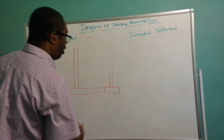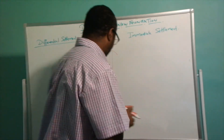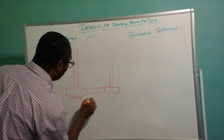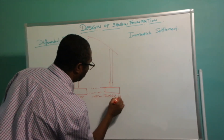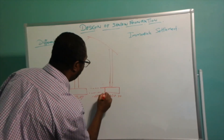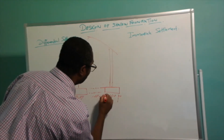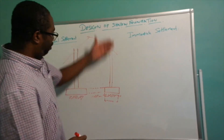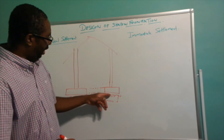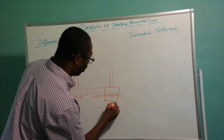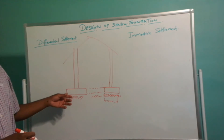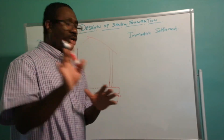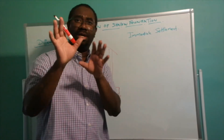Your differential settlement occurs when the soil beneath the footing is such that one portion of your footing drops and settles lower than another portion. So there is a difference in terms of your footing levels. Let me tie this up with immediate settlement.